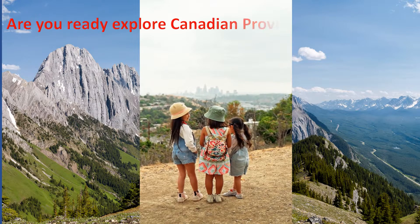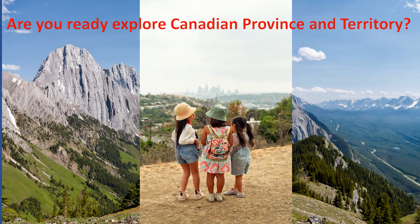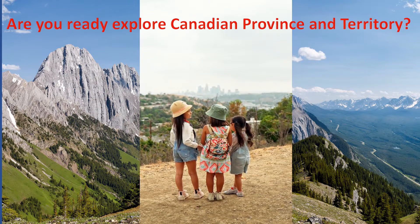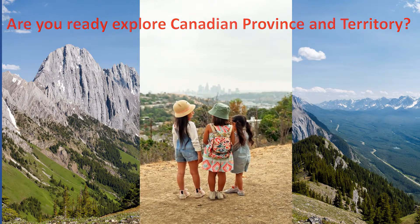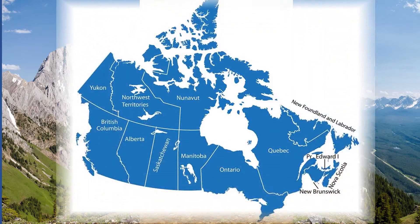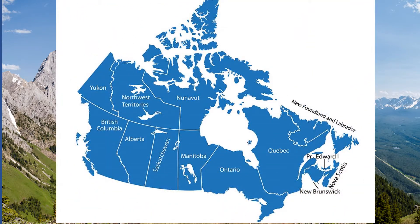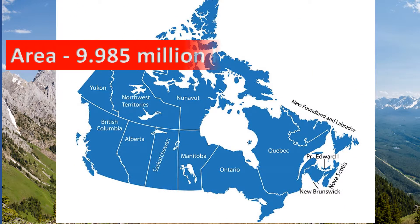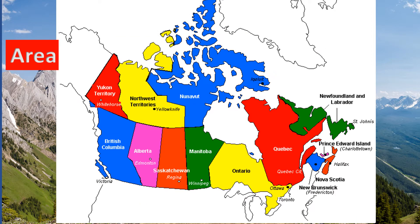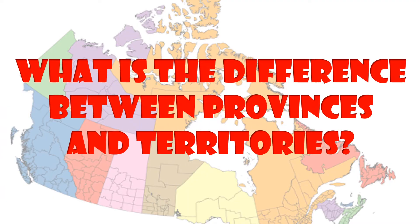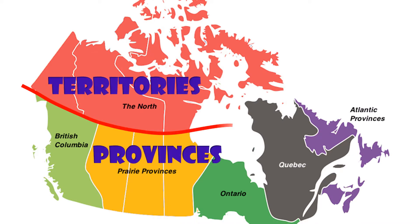Are you ready to explore Canadian provinces and territories? Canada is the second largest country in the world with a total area of almost 10 million square kilometers. It is divided into 10 provinces and 3 territories. You may be asking, what is the difference between provinces and territories?